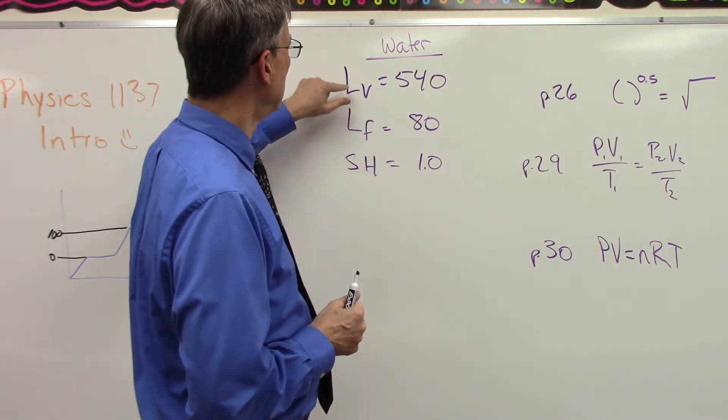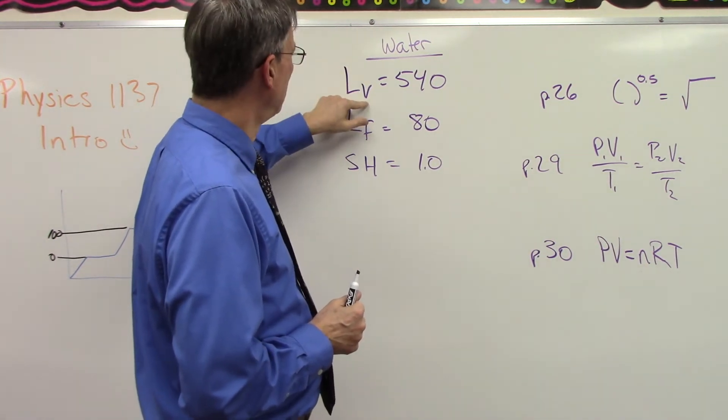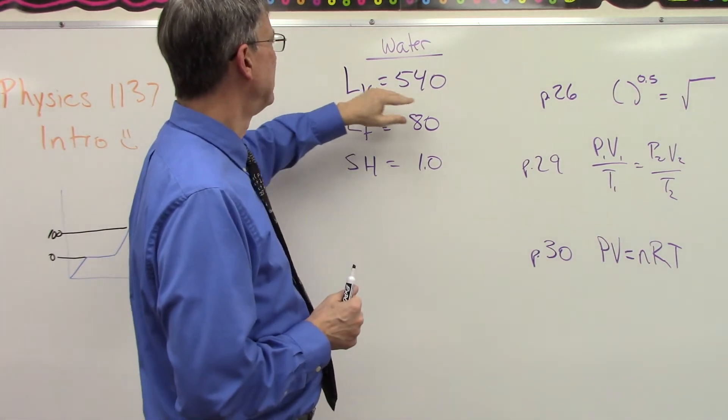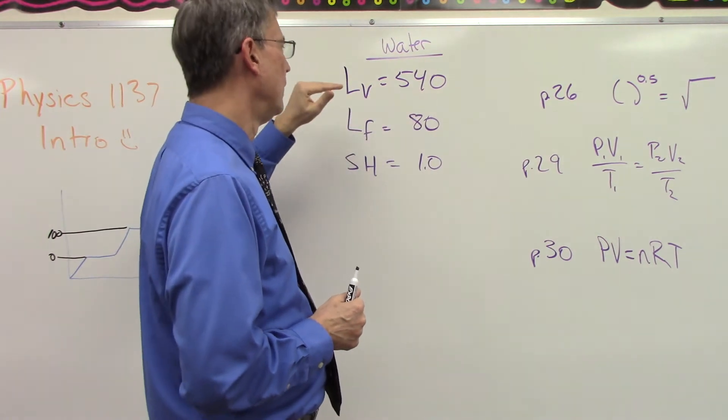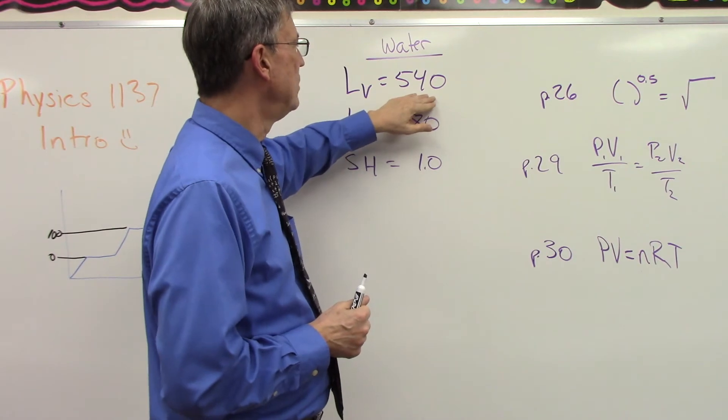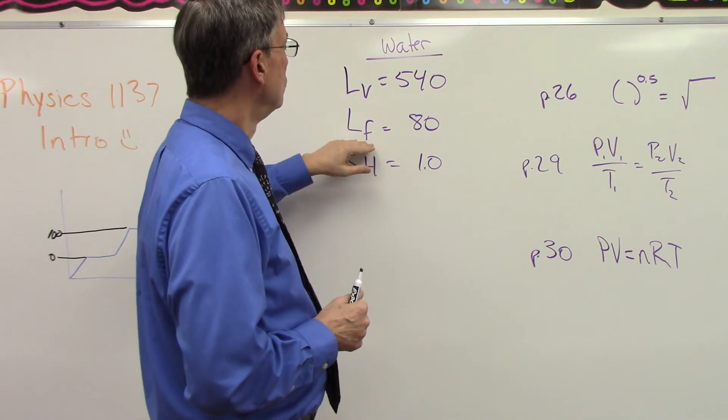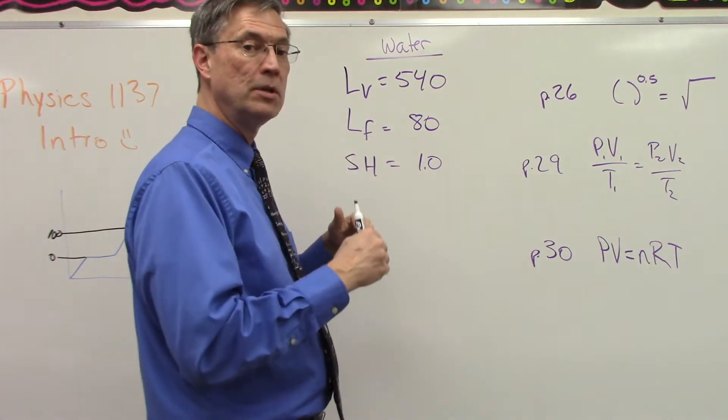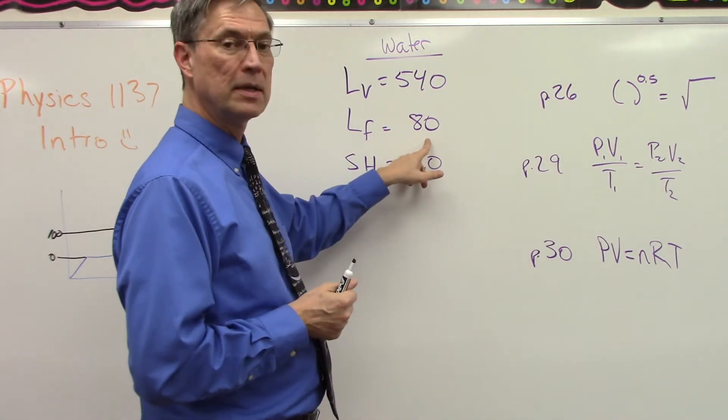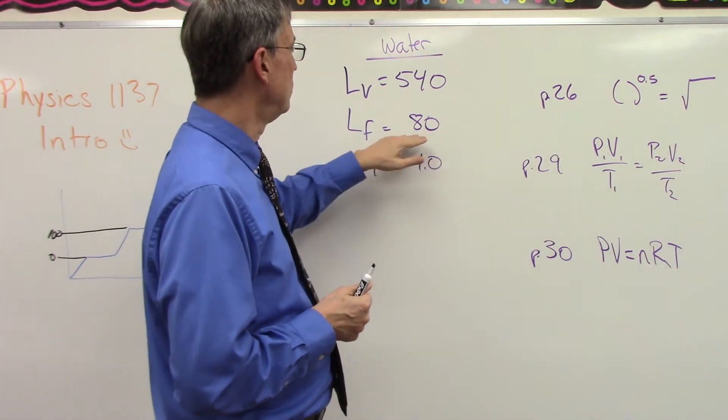For water, this is called the latent heat of vaporization, and this is fusion. It takes 540 calories per gram of water to go from liquid to gas - that's what vaporization is, liquid to gas. To go from freezing to liquid, or to go from liquid to freezing, it would be 80 calories per gram.